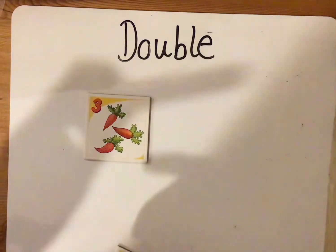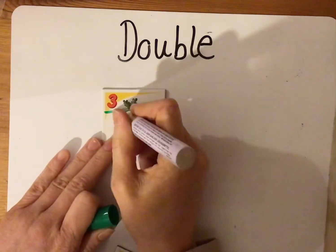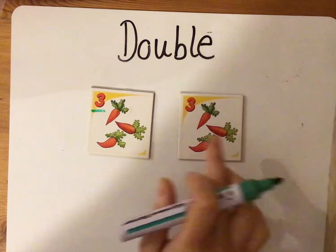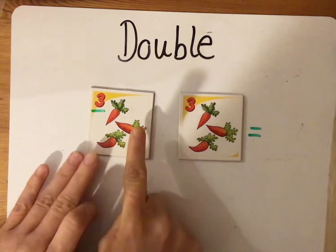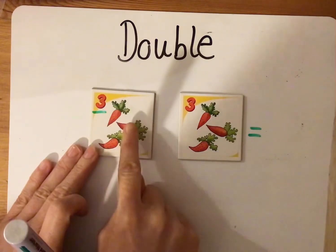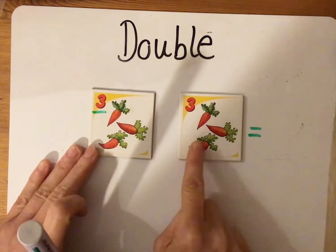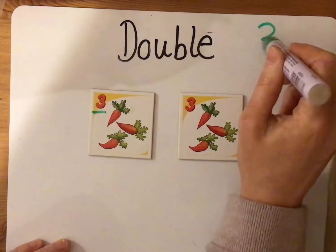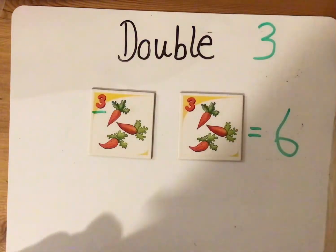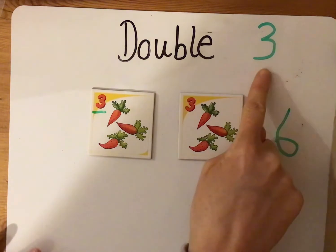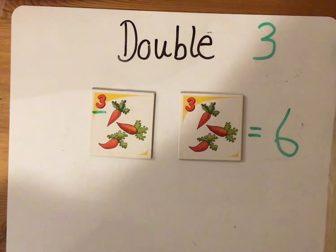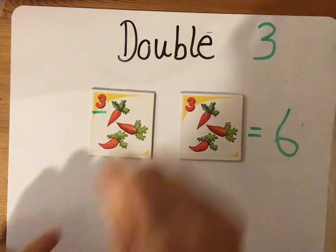So if I wanted to double three I would add three again and then count how many I've got. One, two, three, four, five, six. So double three is six because I added the same number again, counted up, and I had six.